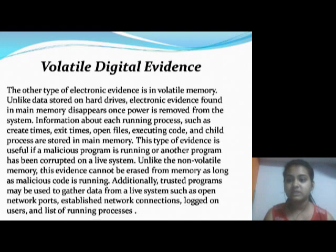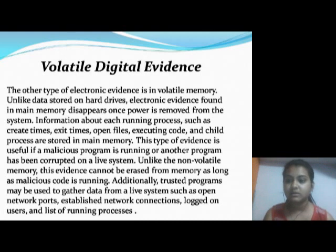The other type of electronic evidence is volatile digital evidence, found in volatile memory. Unlike data stored on hard drives, electronic evidence found in main memory disappears once power is removed from the system. Information about each running process — such as create times, exit times, open files, executing code, and child processes — are stored in main memory.